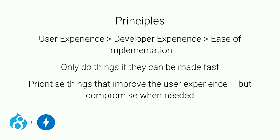Only do things if they can be made fast — that's really what's key. There are a lot of components, a lot of tags, a lot of facilities provided by the AMP project. The reason they built those was that it was focused around the performance profile. If they implemented, say, a Facebook tag or some kind of a widget like Slides, they only did that because they could make it fast and it was in line with their principles for speed. The focus on user experience means that stuff should be prioritized, but you can compromise when needed. It's all about that: user experience, speed — that's really the goal.